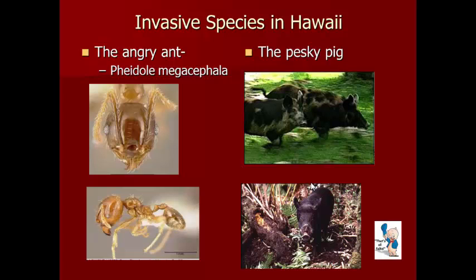Indigenous peoples got in canoes and landed in Hawaii hundreds of years ago, long before the industrial revolution, and this process of transformation started then. Wilson talks about two specific species they brought. First, pigs were brought as a food source — they were domesticated but then got loose and became feral, breeding in the wild. Second, ants came over attached to ships or in cargo as freeloaders. The ant is a very ferocious species with a social structure much like an army.